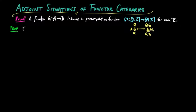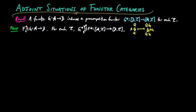We have: if F⊣G is an adjoint situation, then G*⊣F* is an adjoint situation for each category E. We define the unit η* on component Q to be Qη.